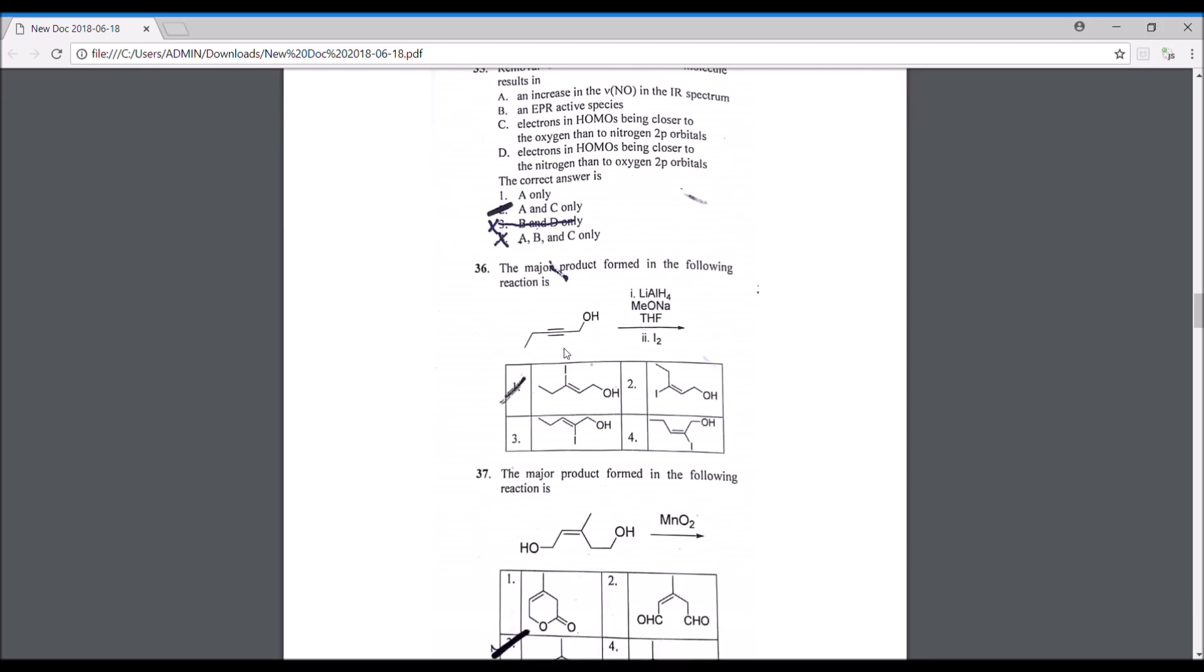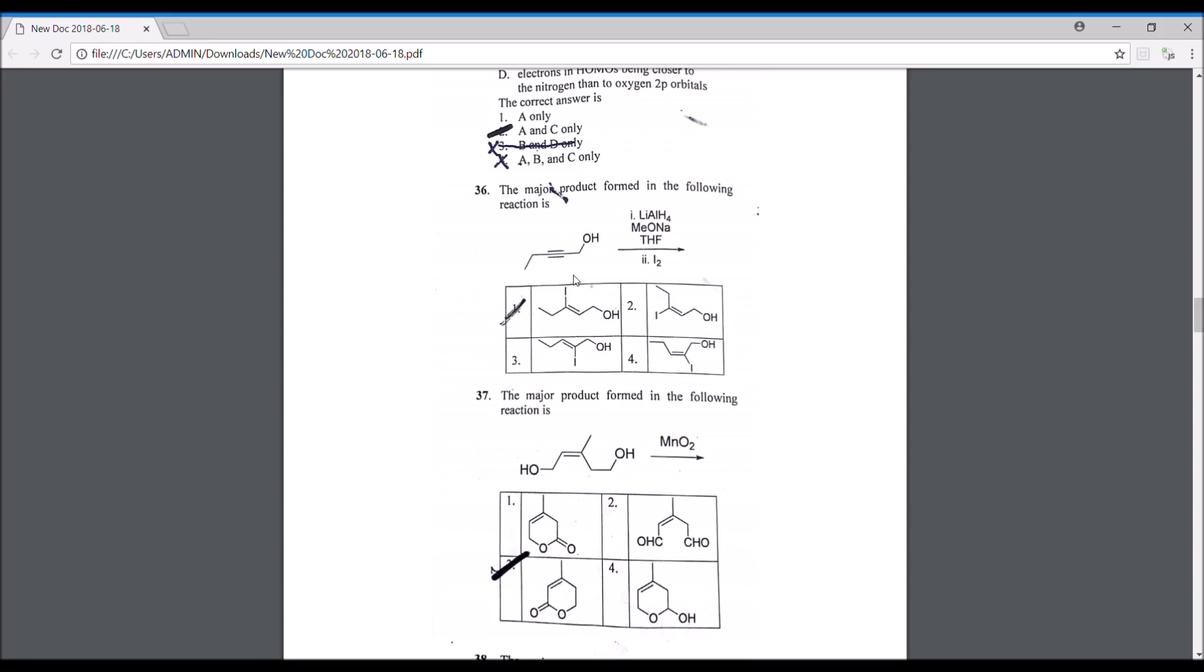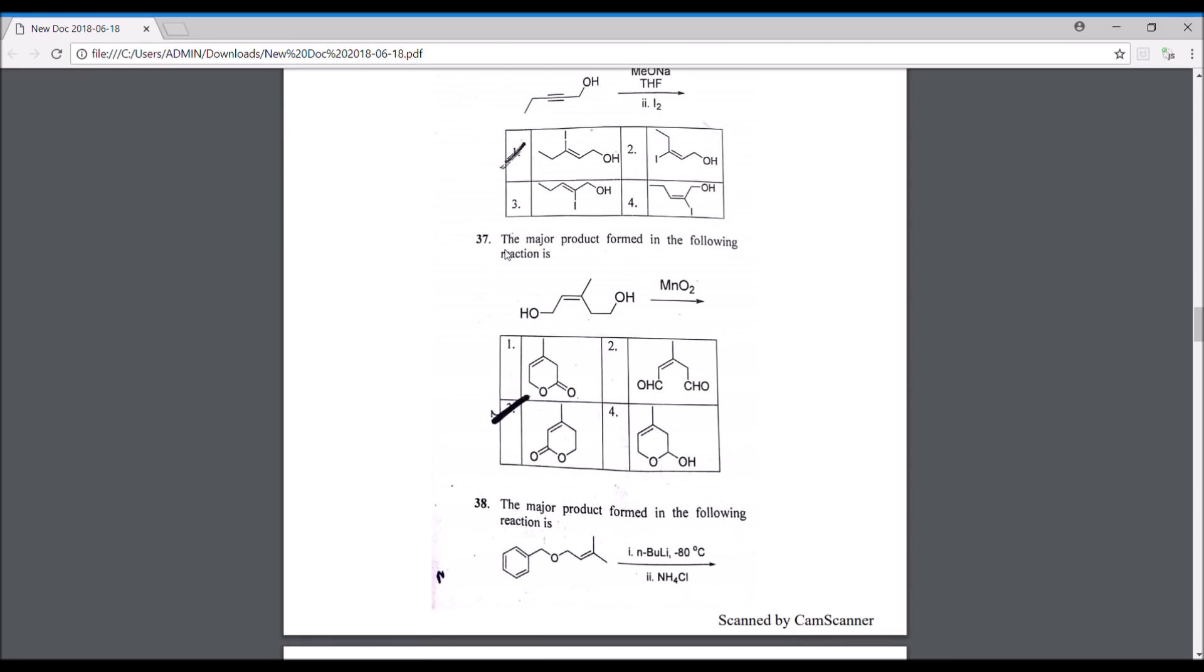These are some organic questions. This one is a reducing agent, lithium aluminum hydride. Since we have an OH, this OH coordinates to the aluminum and there's complex formation taking place, and then we add this electrophile, that is iodine. So this product is formed, this is your cis alkene, so option number one.